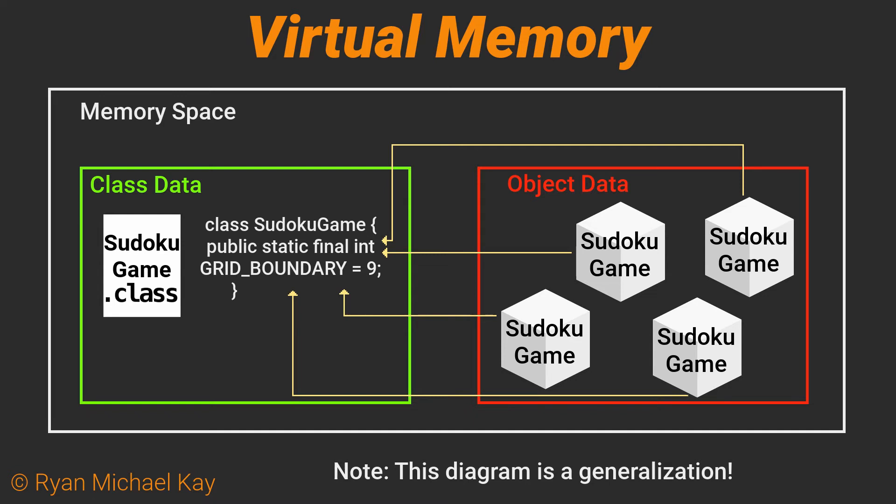There only exists one copy of a given static variable for any number of objects associated with it. For example, we can create 500 SudokuGame objects and they will all be sharing that same static variable. That is why in section 3 I told you to be very careful with non-final static variables — if they are not final, they are a prime example of shared mutable state.